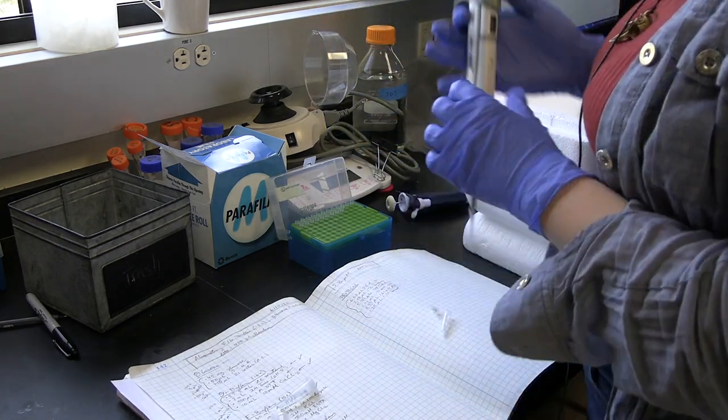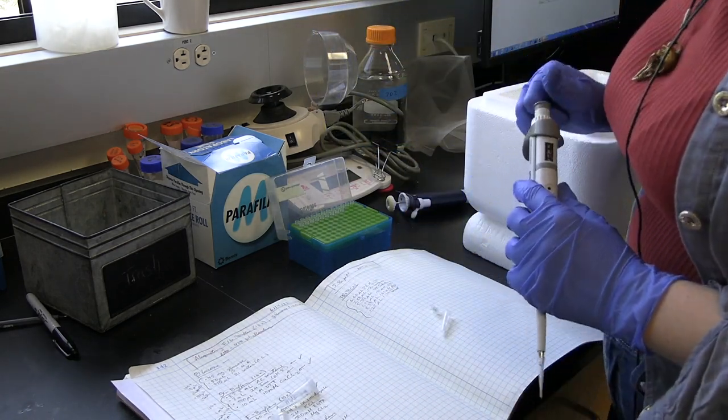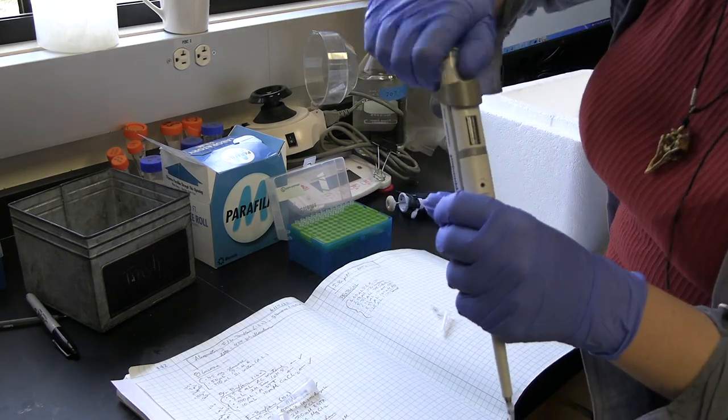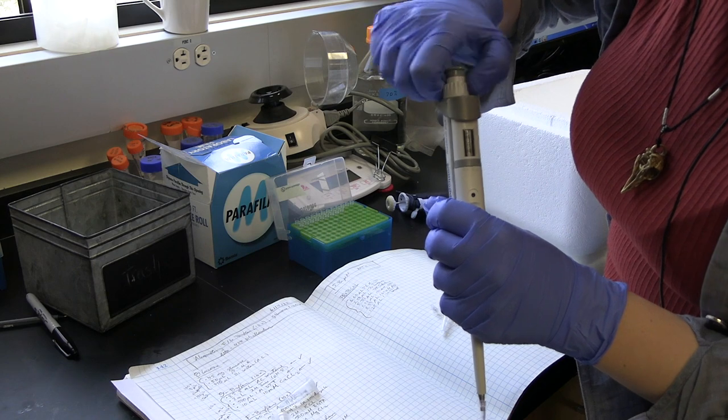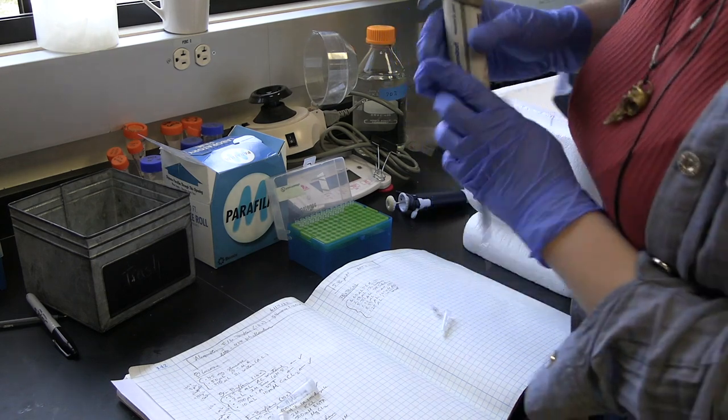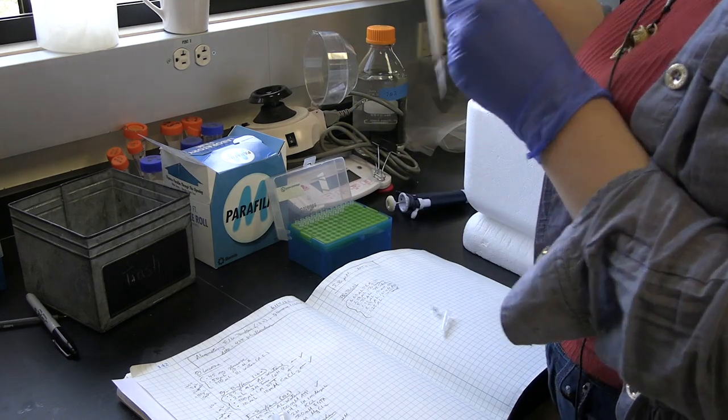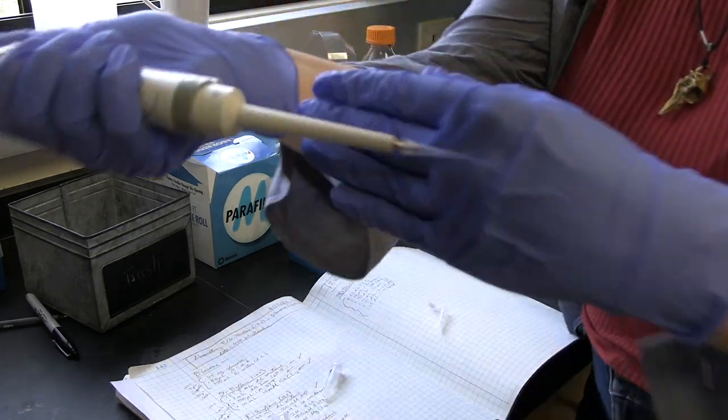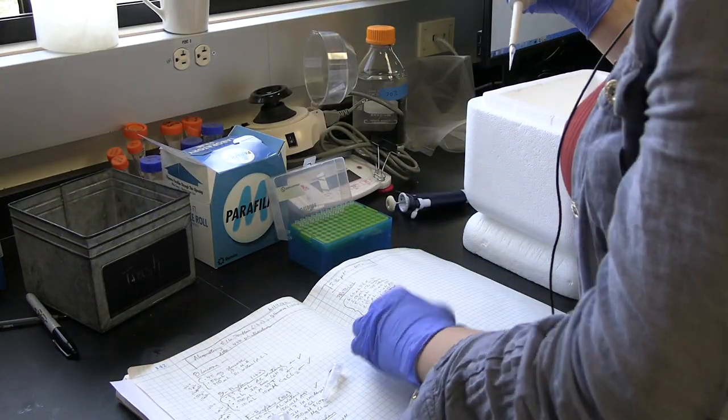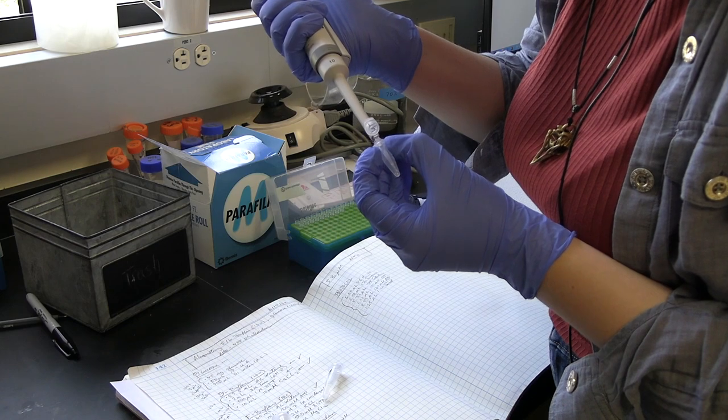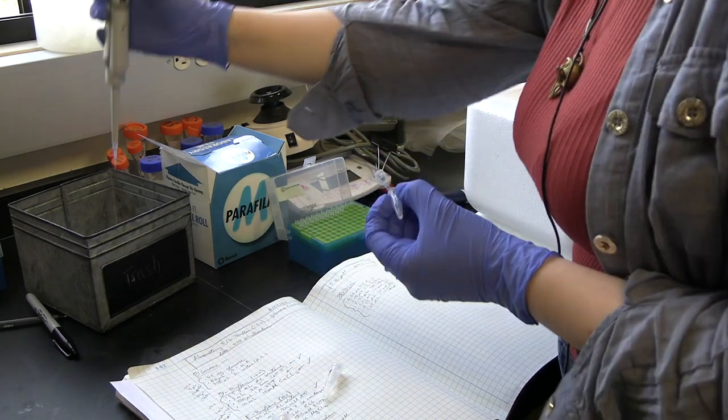Next thing we add is 1% tween. Tween is a surfactant that prevents nonspecific binding. 2.5 microliters. Add that right to our PEM.